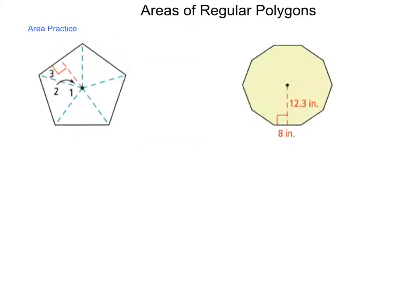One-half apothem is one-half height. The perimeter is the sum of all the bases. So let's take a look at how we can use this to help us find some area. First, we need to be able to find the sizes of different angles. So in the regular pentagon here, three angles are shown and numbered: one, two, and three.